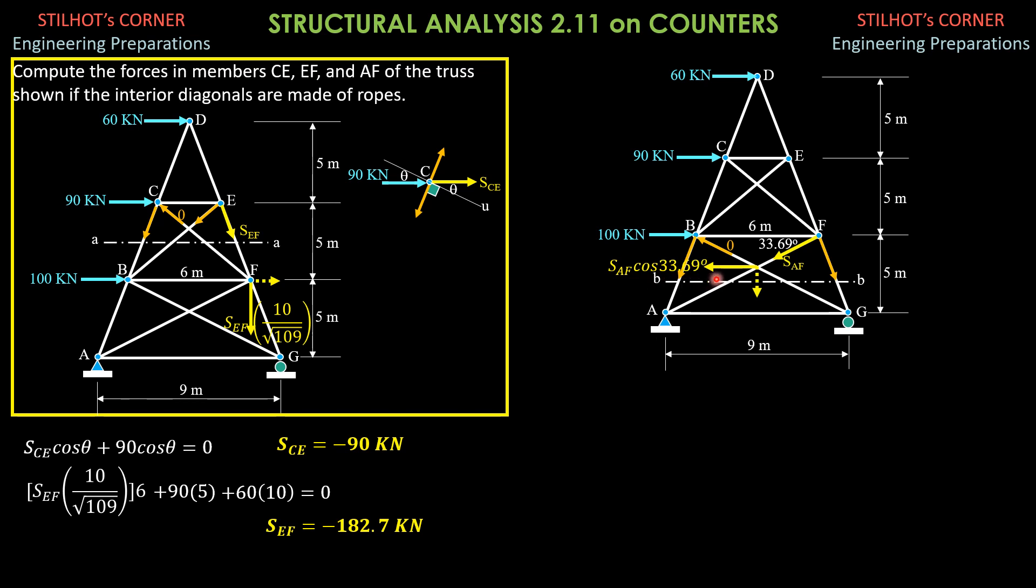We need to solve this distance H. This is solved by similar triangles: H as to 3 meters equals 5 as to 7.5, and you will get H is 2. The other way is tangent 33.69 degrees equals H over 3 and H is indeed 2 meters. So 2 meters plus 5 plus 5 is 12 meters. The moment arm of SAF cosine 33.69 degrees about D is 12 meters.